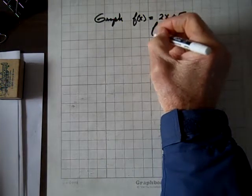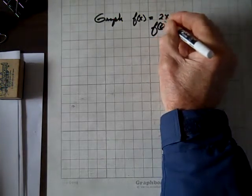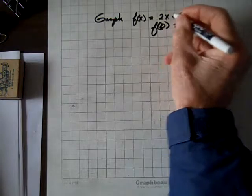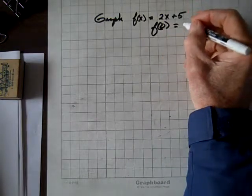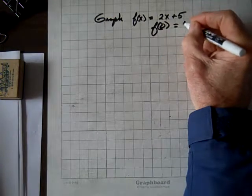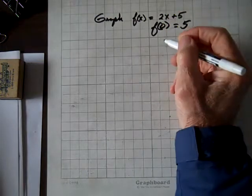To find the y-intercept, we evaluate f(0). And f(0), letting x be 0, we wind up with f(0) = 5 because that term disappears.